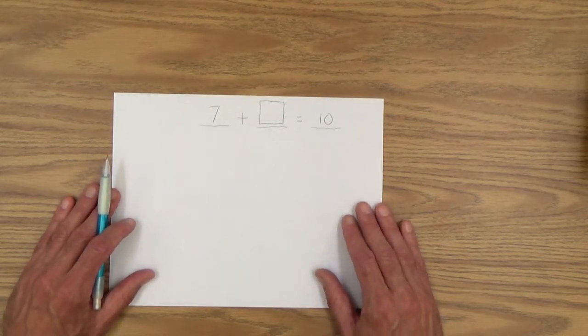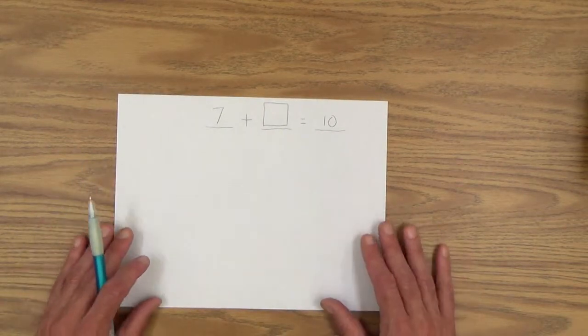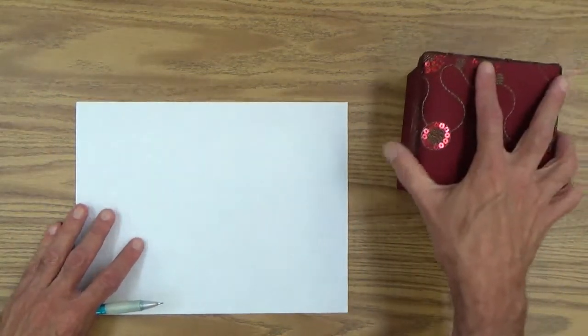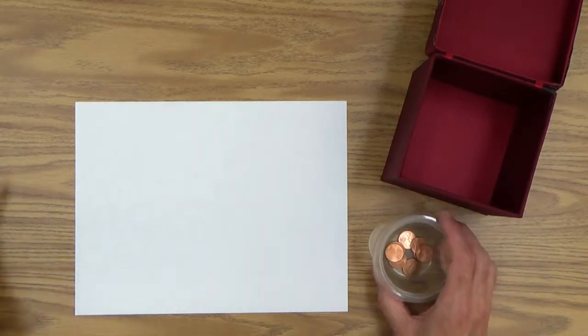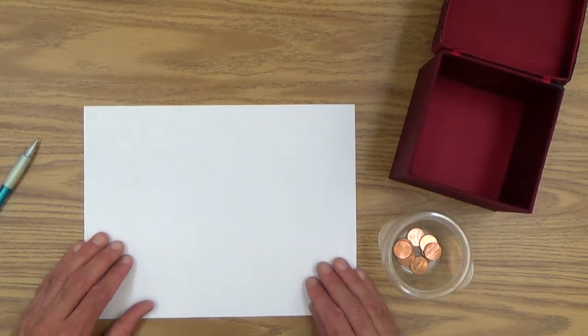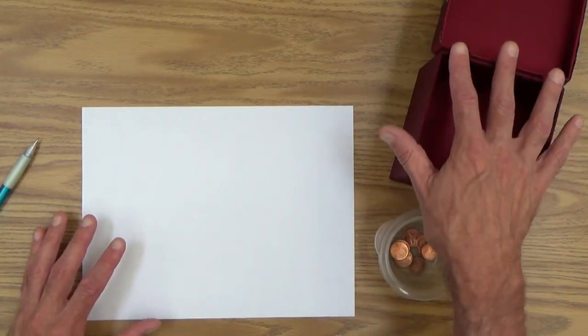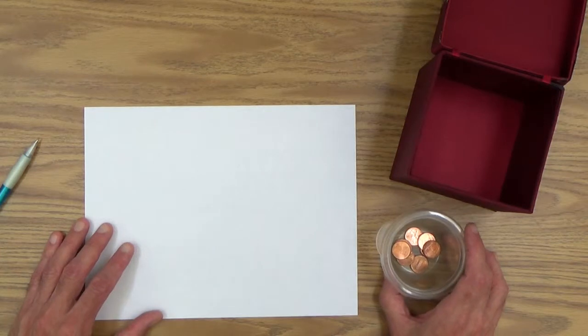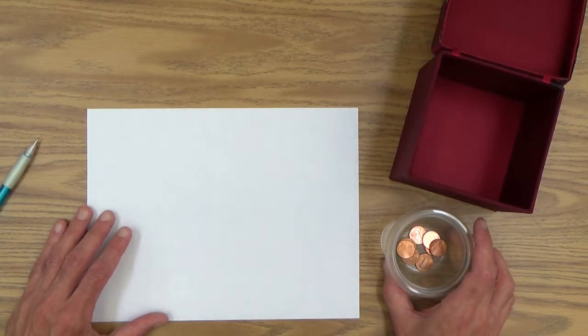So now let's try what I call a subtraction number story. And I'm going to bring in some props for this one and probably a new sheet of paper too. Let's bring in the mystery box. Open it up. Let's get our bank over here. And here is my number story. And this is great because now we're actually putting it into some concrete objects. So perhaps your child could get a better idea of what's going on.